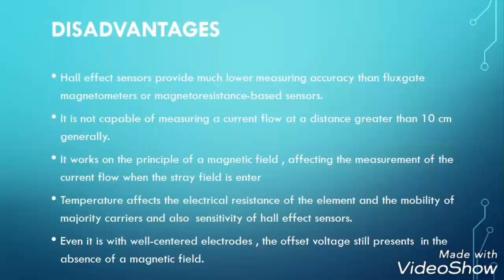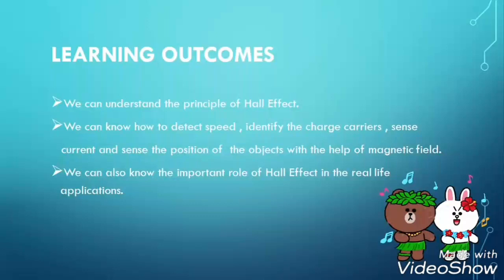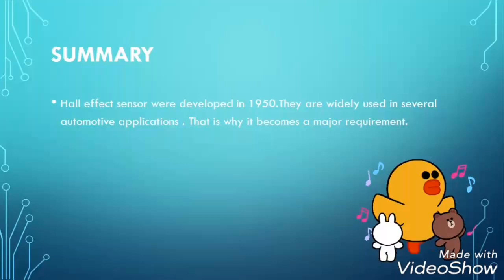These factors affect the electric resistance of the element, the mobility of majority carriers, and also the sensitivity of the Hall effect sensor. In conclusion, we can understand the principle of Hall effect, how to detect speed, identify the charge carrier, sense current, and find the position of an object with the help of the magnetic field. We can also know the important role of Hall effect in real-life applications. Thank you for your attention.